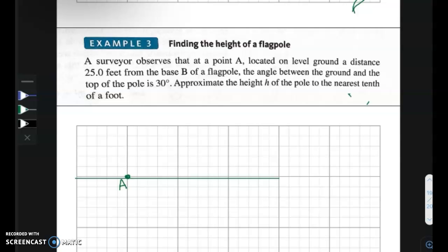Then he's 25 feet from the base of the flagpole B. So I'm going to draw a flagpole. You've got a flag. The base is at point B, and they say it is 25 feet. He is 25 feet away.